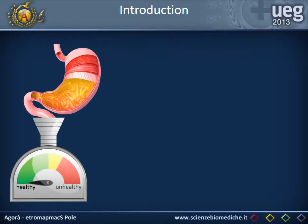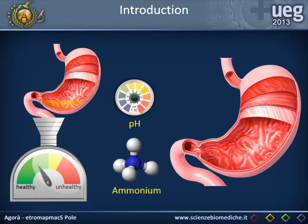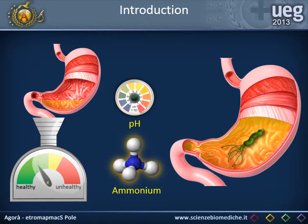A possible method to determine gastric health could be the analysis of gastric juice. Two reliable indicators could be the pH and the ammonium concentration. The former reflects the gastric capability to produce acid, and the latter the presence of H. pylori infection and the indirect degree of gastritis.